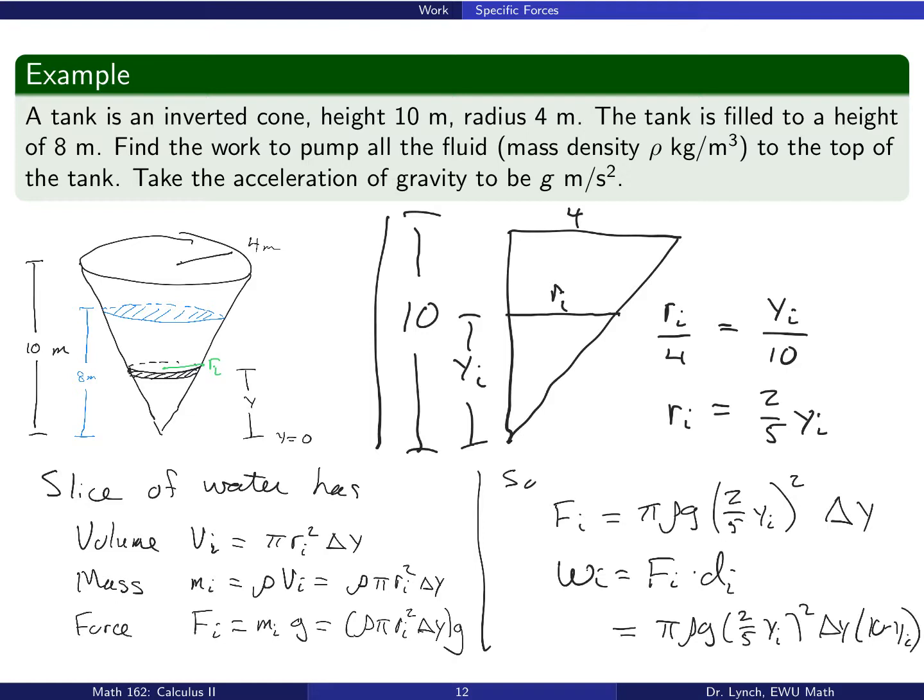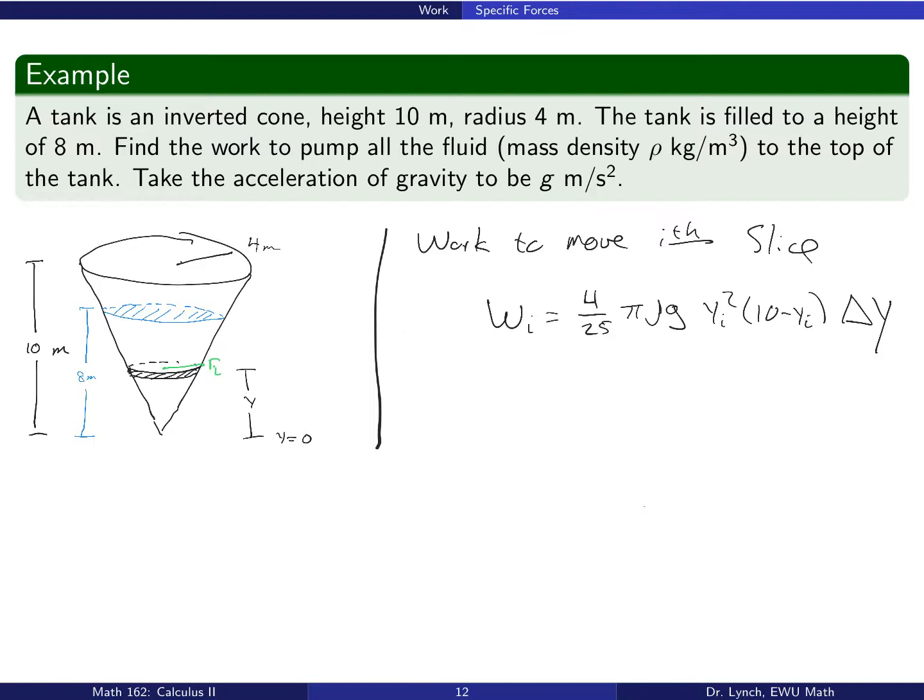So at long last, we have an expression for the work to move that i-th slice of water at height y sub i. And that expression is pi rho g times two-fifths y sub i quantity squared times 10 minus y sub i times delta y. So again, here's that work w sub i to move the i-th slice of water. I've reorganized the constants one more time to write it as 4 over 25 pi rho g times y sub i squared times 10 minus y sub i delta y.